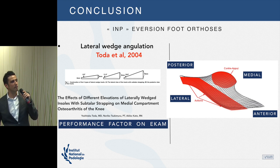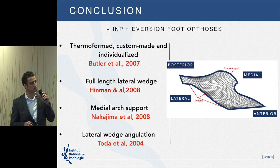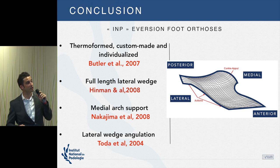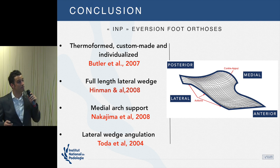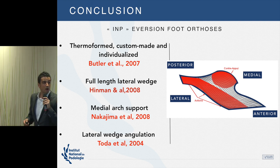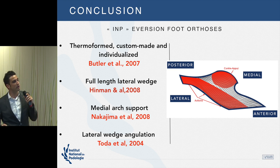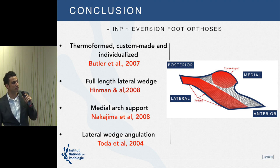In conclusion, what is very interesting is that the Anavine orthosis is exactly the combination of these four characteristics — thermoform custom fabrication, full-length lateral wedge, medial arch support, and appropriate angulation — each of which has been separately proven in the literature as a performance criterion for EKAM reduction. This combination may explain why we achieve better results than those reported in the literature. Thank you very much.